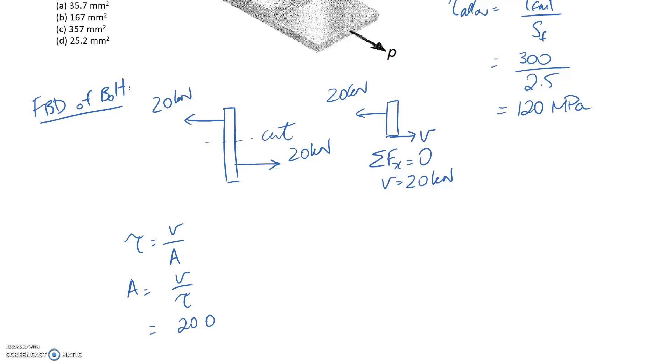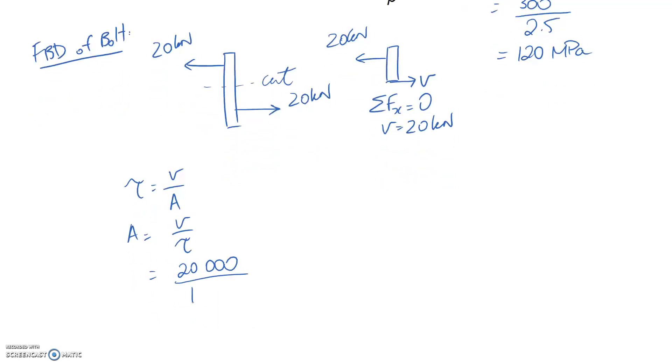And then it gets divided by the allowable shear stress, which is 120 megapascals. And if I leave this in megapascals, that means I'm working in newtons and MPa. And newtons divided by MPa will give you millimeters squared at the end. So that's what I'm going to do. Remember that if you're uncomfortable with those conversions, just go back to base.